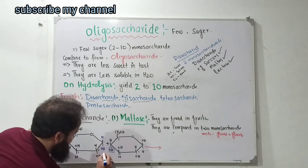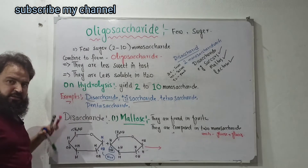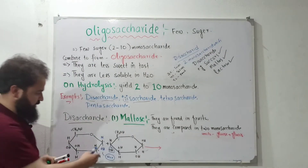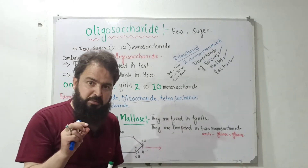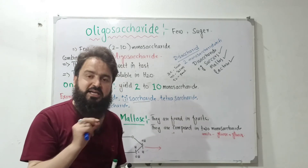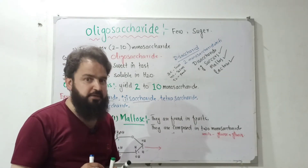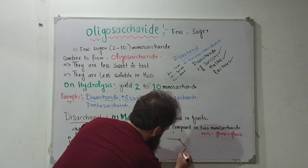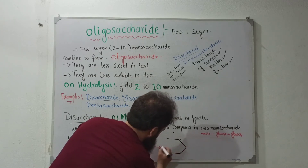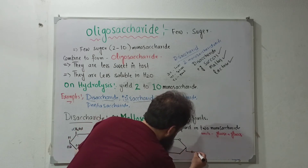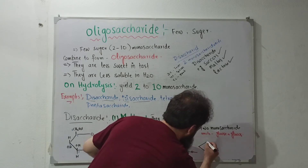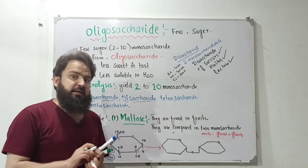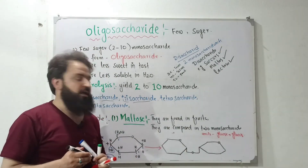When two glucose units are joined, a water molecule is removed — that is condensation. The bond formed is known as the glycosidic bond. Glycosidic bonds are covalent in nature.